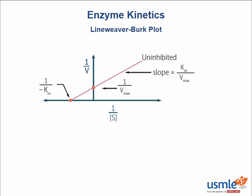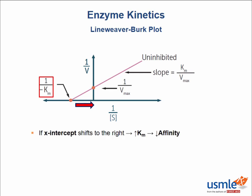Moving on to another high-yield graph called the Lineweaver-Burk plot. Again we are plotting velocity against substrate concentration, but pay close attention — we are now dealing with an inverse or double reciprocal plot of the Michaelis-Menten graph. It's Michaelis-Menten turned on its head. The x-intercept represents negative one over Km, and the y-intercept represents one over Vmax. If we shift the x-intercept to the right, closer to zero, Km increases and affinity decreases.